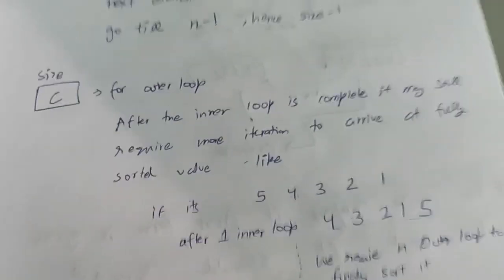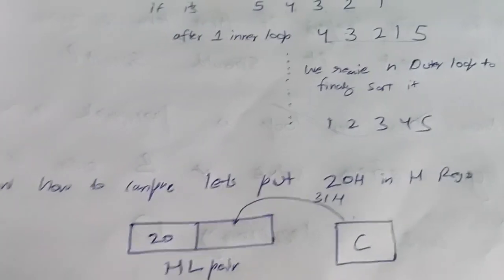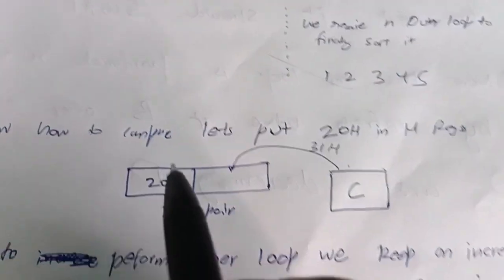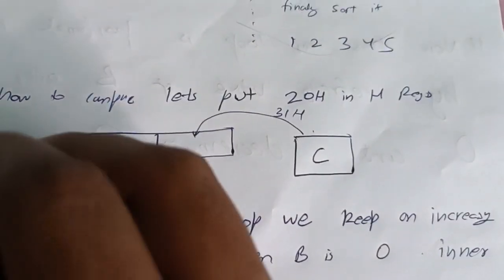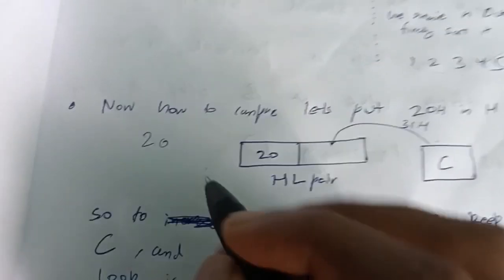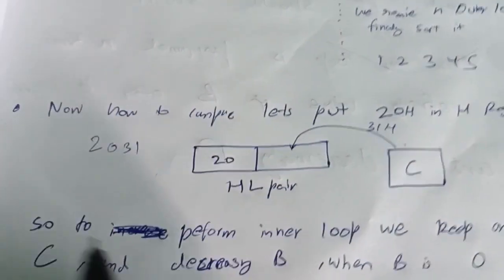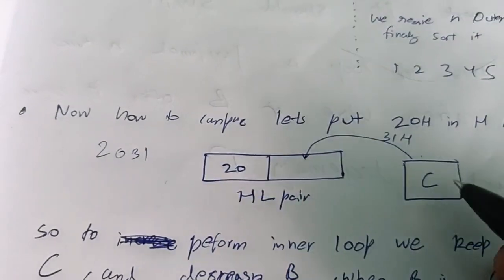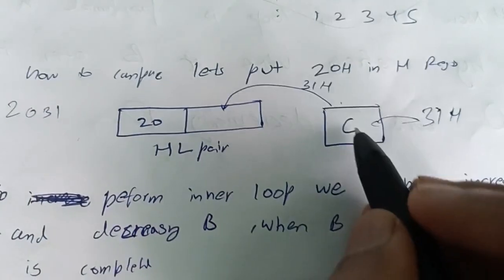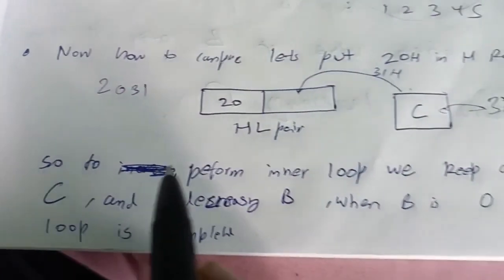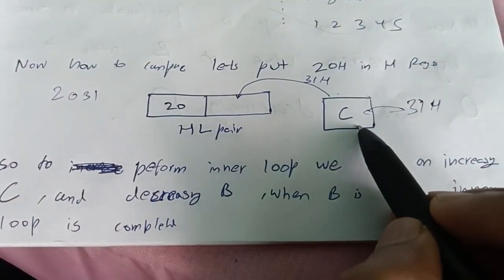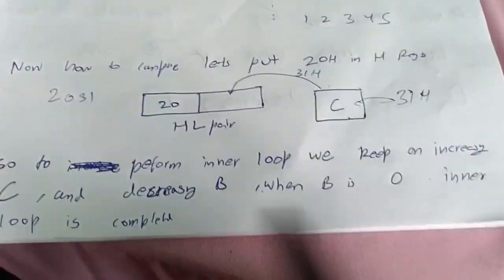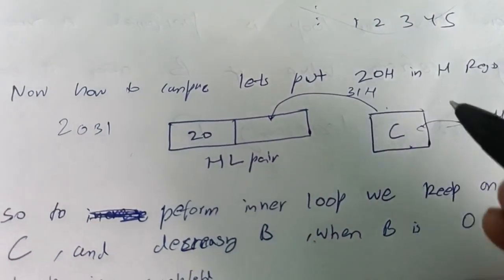To compare the current element and the next element we use the HL register pair. In H we store 20H — the high byte of the memory address. Memory location 2030 holds the size, so from 2031 onwards we store the array elements. C is loaded with 31H, then C is moved into L. For the inner loop we keep incrementing C and decrementing B; when B reaches 0 the inner loop is complete.